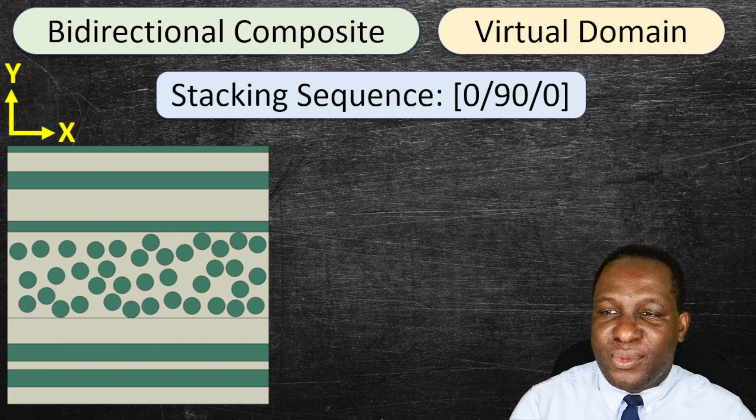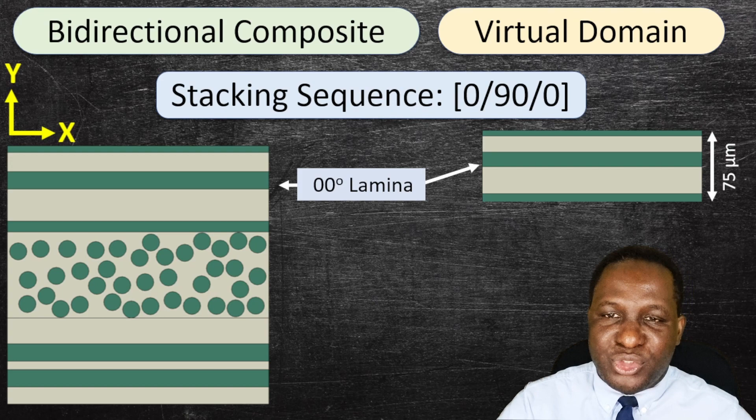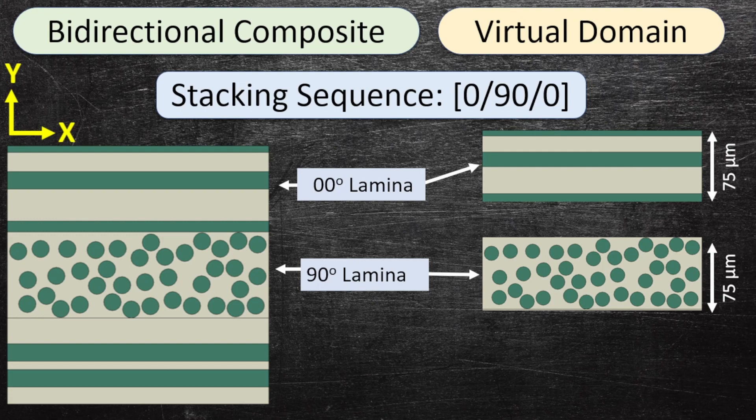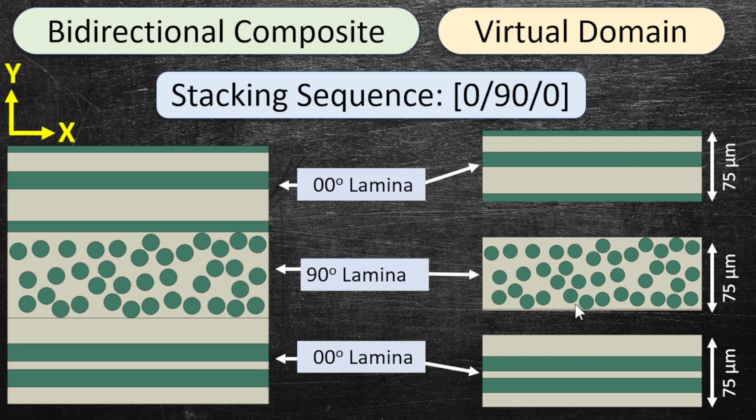If we split it apart, the first lamina at the top would have a height of 75 microns and a width of 225 microns — that is the 0-degree lamina. Then we'll have a 90-degree lamina, and finally another 0-degree lamina. They all have randomly distributed fiber arrangements.